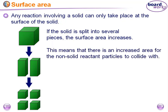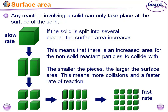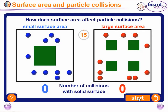We have the same amount of substance, but we divide it into small pieces, and those into smaller pieces, and further. The smaller the pieces, the larger the surface area, and this means more collisions. More collisions means a faster rate of reaction.